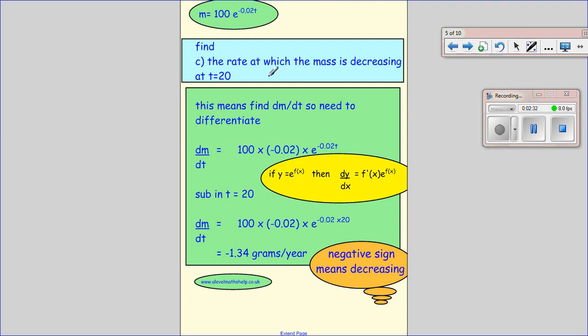So the last bit. The rate at which the mass is decreasing at t equals 20. So when we're talking about our mass decreasing and the rate at which it's decreasing, we're looking at the change in the mass with respect to time. So how much is the mass changing over a given time? So we do this by differentiating. And hopefully you remember when you differentiate y equals e to the x, you get dy by dx equal e to the x. And if you have y equals e to the function of x, you get the differential of the function times e to the f of x.